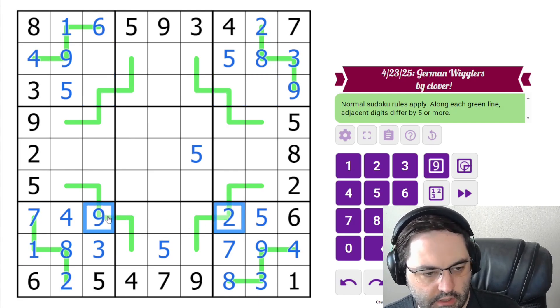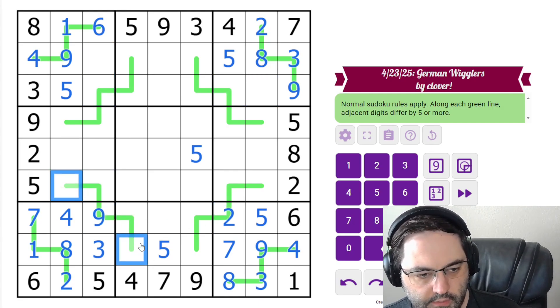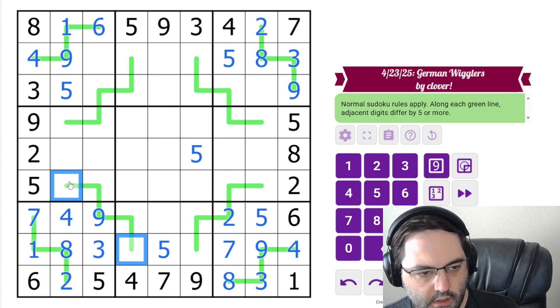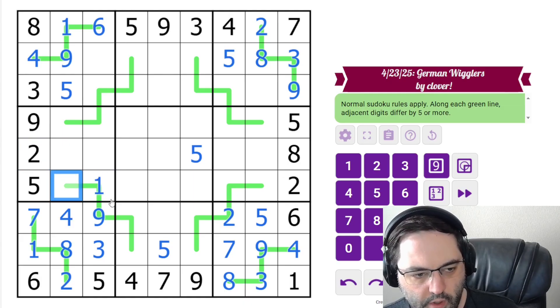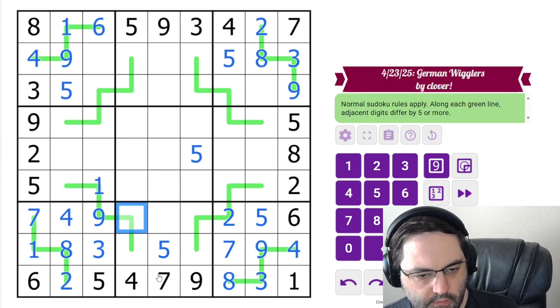We do get some information here. So these must be low, these must be high. This could be 6 or 7. And this can't be 2. So this must be a 1, with a 6, 7 there.